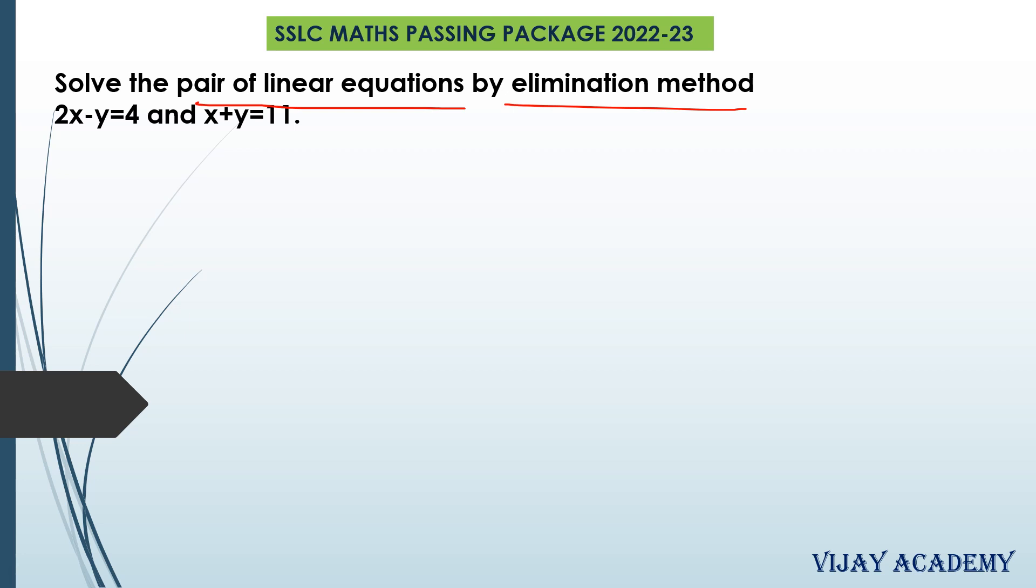So you know the meaning of zero pairs - that is the same numerical value with different signs, like minus 2 plus 2, plus 3 minus 3, and minus 4 plus 4. All these are zero pairs.